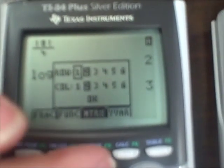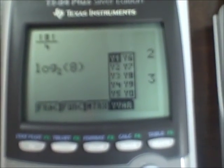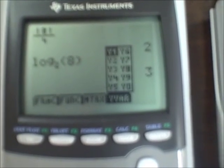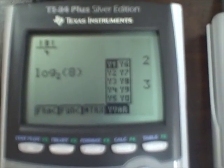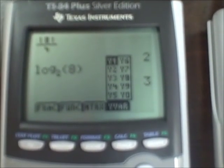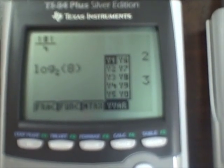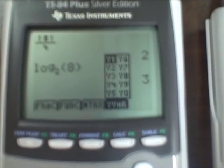And then alpha trace is my variable key. So when I want to paste things in Y1, Y2, Y3, I no longer have to go vars, right arrow, enter, enter. I can just alpha trace and pick the Y function I want to paste it into.